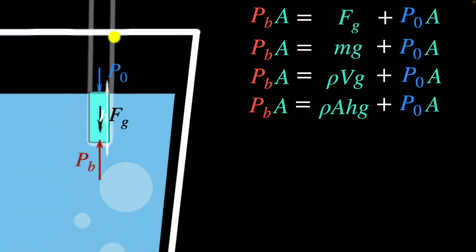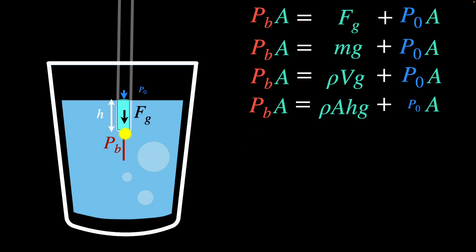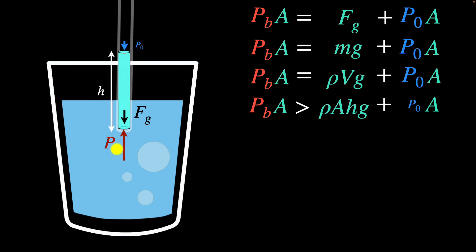Now let's see what happens when you suck on the straw. When you do that, some air molecules are gone from the straw, so the air pressure inside drops. But the pressure from the bottom stays the same, because that depends on the depth and the atmospheric pressure outside, which is the same. Only the pressure inside the straw has reduced. So the left-hand side stays the same but the right-hand side has reduced — they're no longer equal. The force from the bottom is now larger than the total force from the top, so there's a net force acting upwards, pushing the liquid up. It's not suction — it's actually being pushed from the bottom because the pressure on the top reduced.